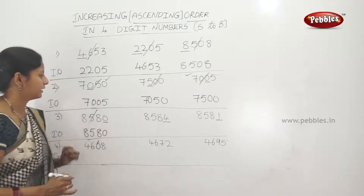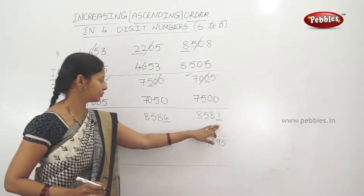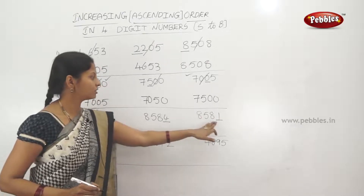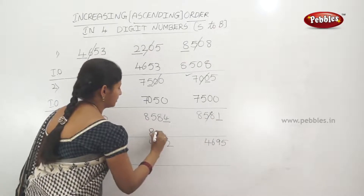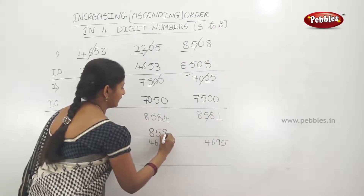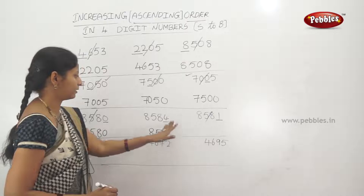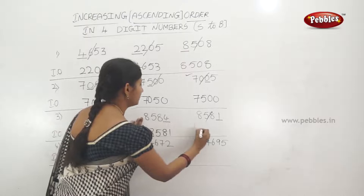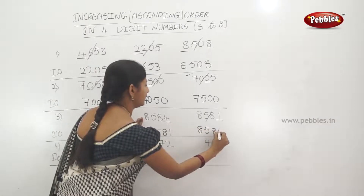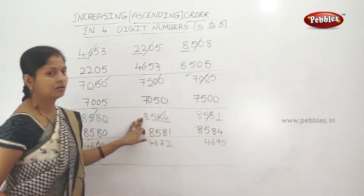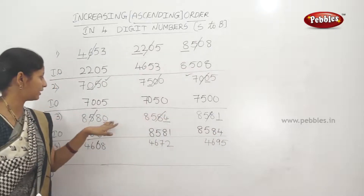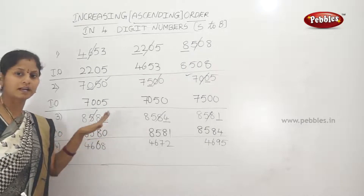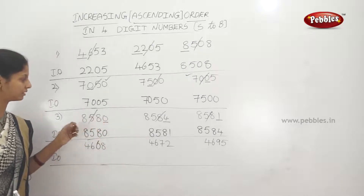8,580 is the smallest number. Next, comparing 4 and 1: 1 is smaller than 4, so 8,581 is next. The last and biggest number is 8,584. Ascending order: 8,580; 8,581; 8,584.